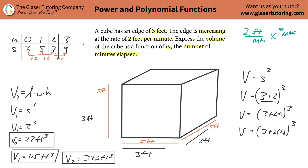What happens if two minutes elapses? It would be three plus four, which is seven. And seven cubed is 343. That pattern is going to continue. Once you identify patterns and they work for the first few cases, it's probably going to be good.